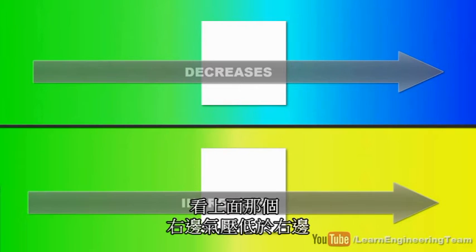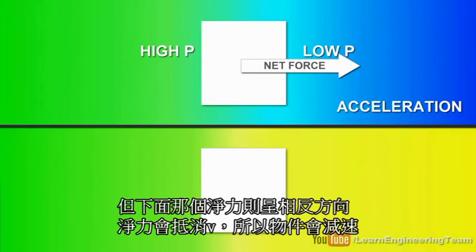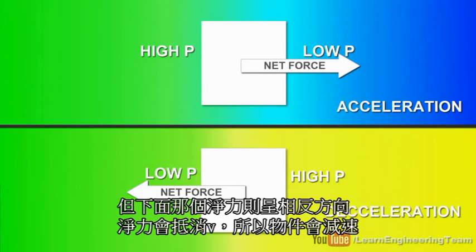For the top particle, pressure on the right side is less than at the left side. So, there will be a net force in the same direction of velocity, and the particle will speed up. However, the reverse is true for the bottom particle. Here, the net force is against velocity direction, so it will decelerate.